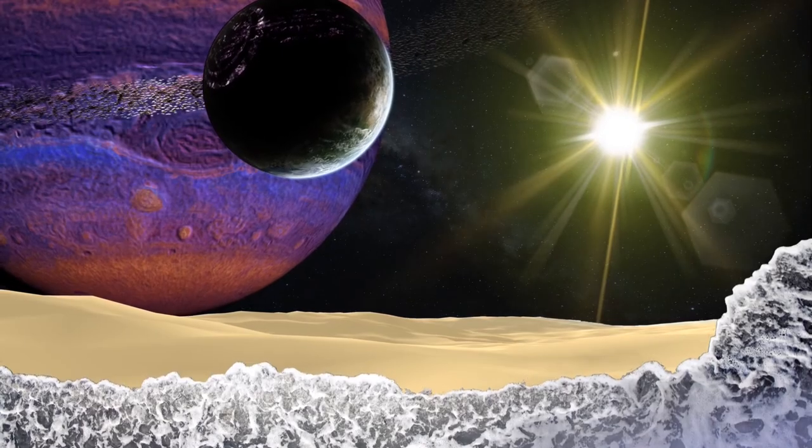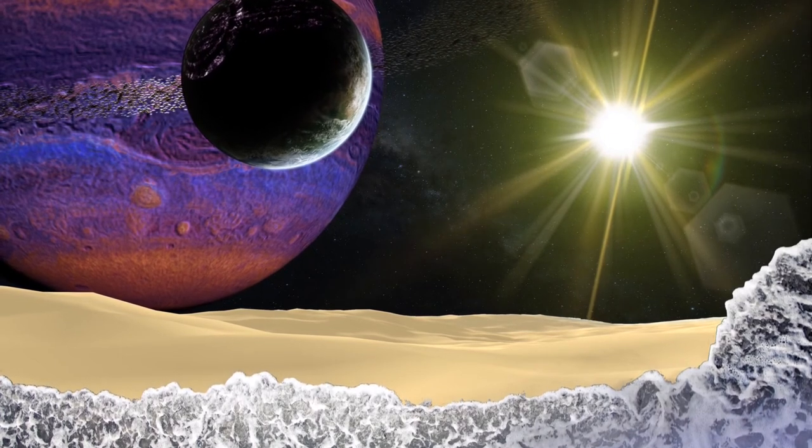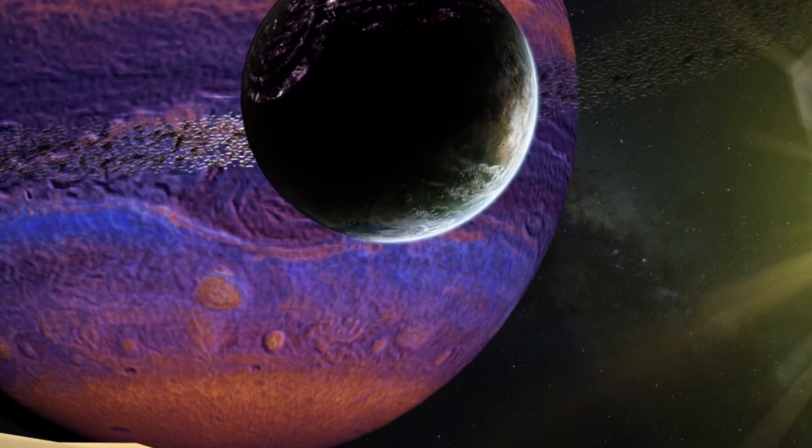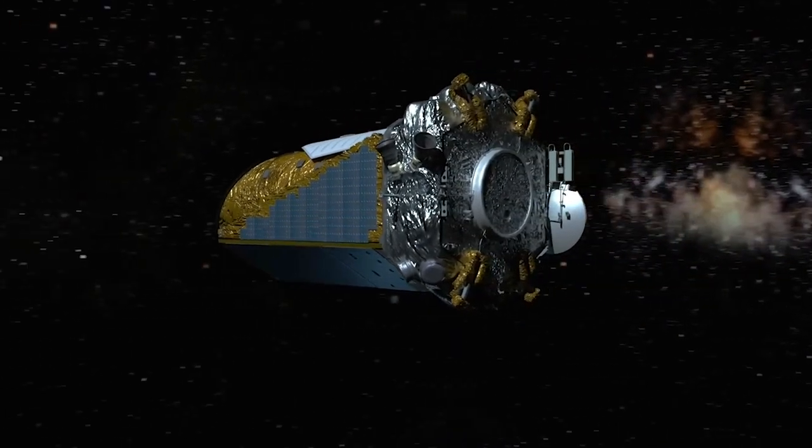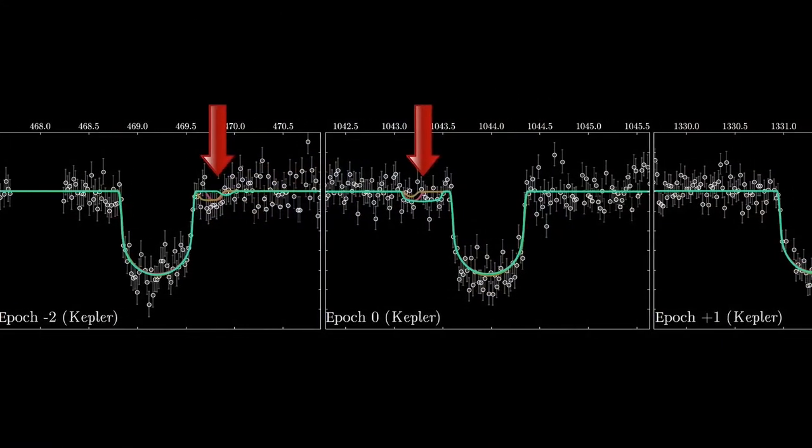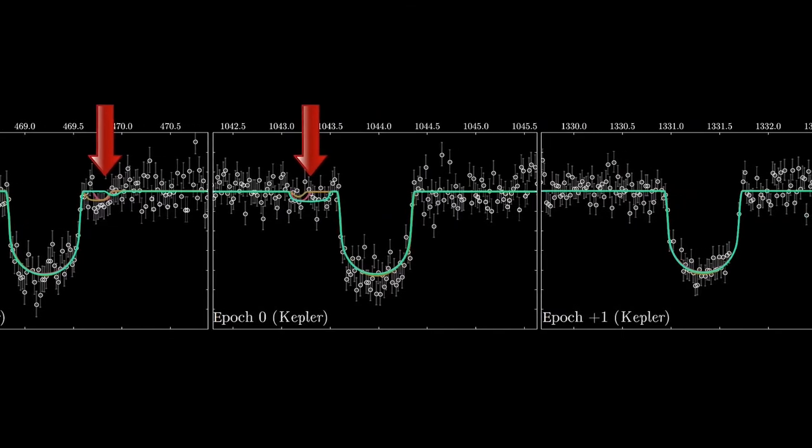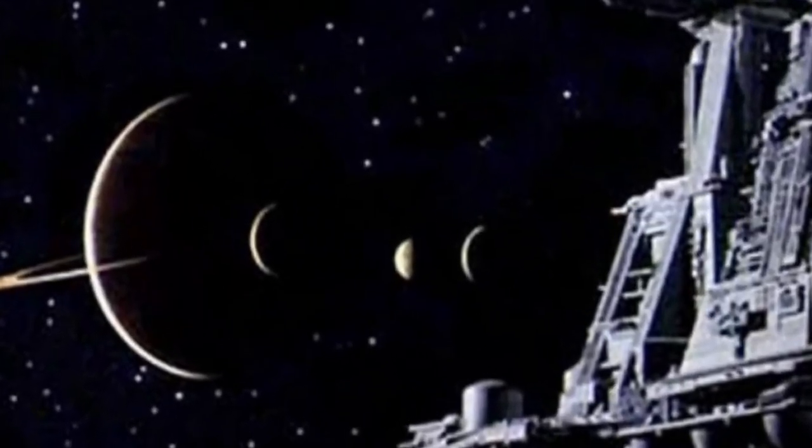If you excuse my hastily constructed allegory, finding exomoons is a great hurdle in our thirst for knowledge. If finding exoplanets is like looking for a needle in a haystack, then finding exomoons around them would be something akin to finding a particular haystack on an earth-sized planet, and then indeed finding the needle within it. Exomoons are not a new idea and astronomers have wondered about them for many years.